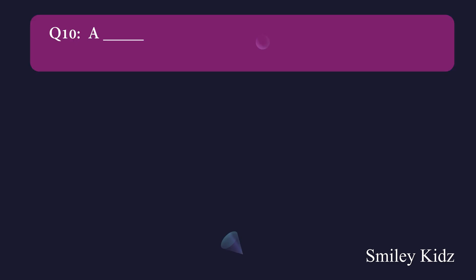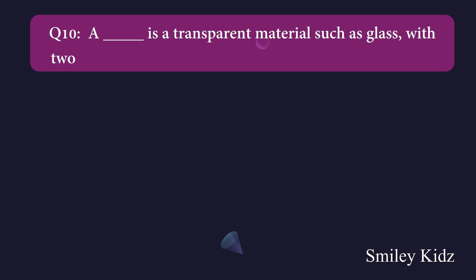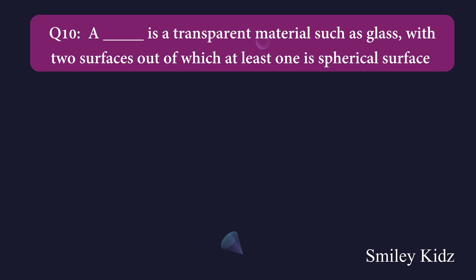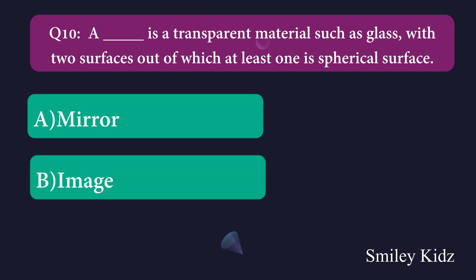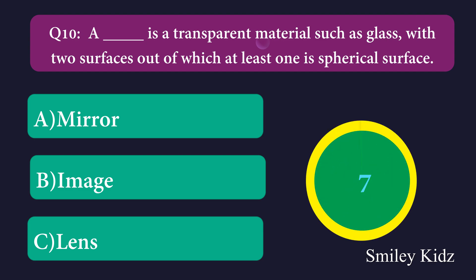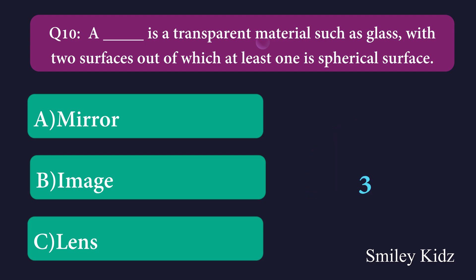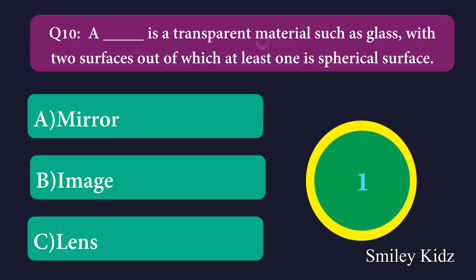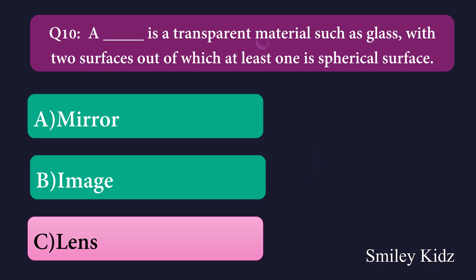Question number ten: A dash is a transparent material such as glass with two surfaces, out of which at least one is a spherical surface. Option A: mirror, Option B: image, Option C: lens. The right answer is lens. A lens is a transparent material such as glass with two surfaces, out of which at least one is a spherical surface.